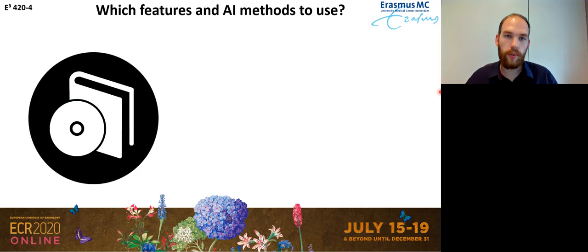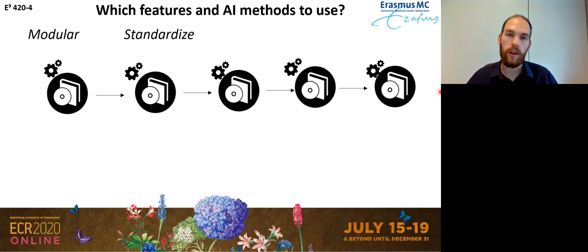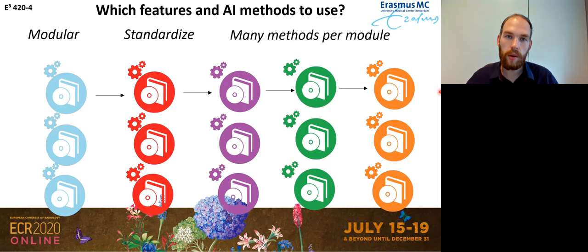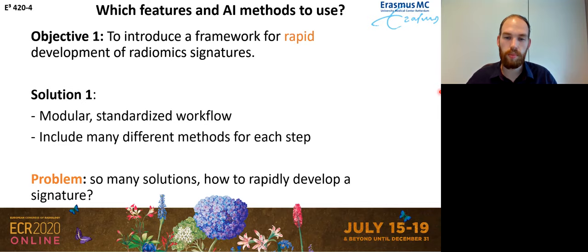So let's go through this step by step. What we did is we first split up the radiomics workflow into a modular workflow — defining specific components such as feature extraction, feature selection, etc. Then we've standardized all these components so they occur in a specific order and each gets a specific label. And since we've standardized these components, we can go ahead and include many different methods for each of them. What we end up with is basically our first learning goal: a framework for rapid development of signatures — a standardized workflow in which we can include many different radiomics methods. But how can we use this for rapid development, given there are still many different solutions in the platform? How can we rapidly get a working signature out of all these methods?